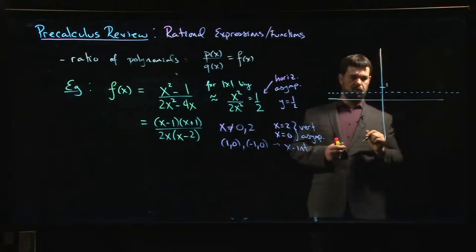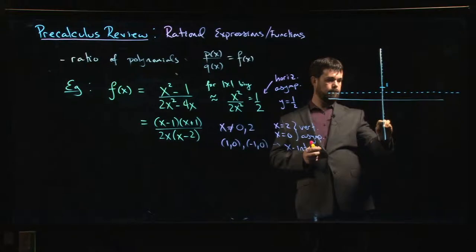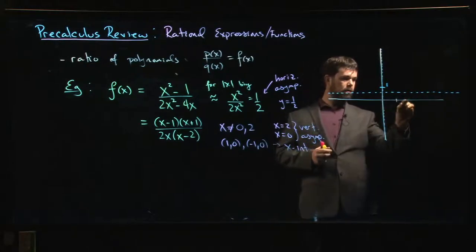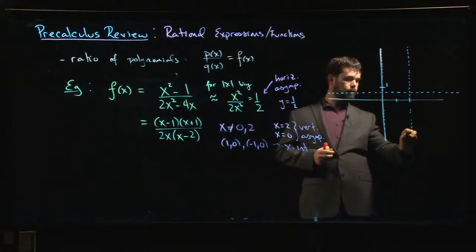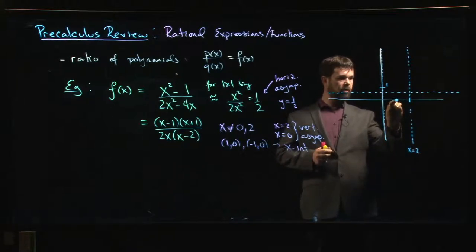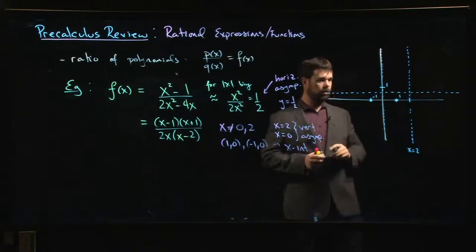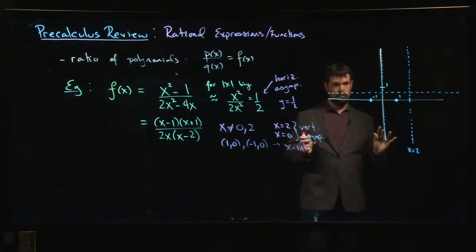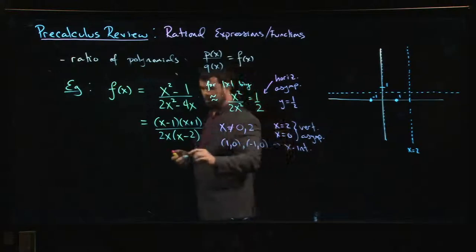We've got that horizontal asymptote at one-half. The y-axis doubles as a vertical asymptote, so does x equals 2. So x equals 2 is a vertical asymptote. I know I have intercepts at 1 and at minus 1.